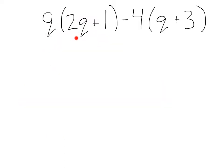Here we've got q times 2q plus 1 minus 4 times q plus 3. Let's start with this first group here and distribution. If we distribute this q, we'll get q times 2q, that'll be 2q squared, q times 1, that'll be plus 1q.